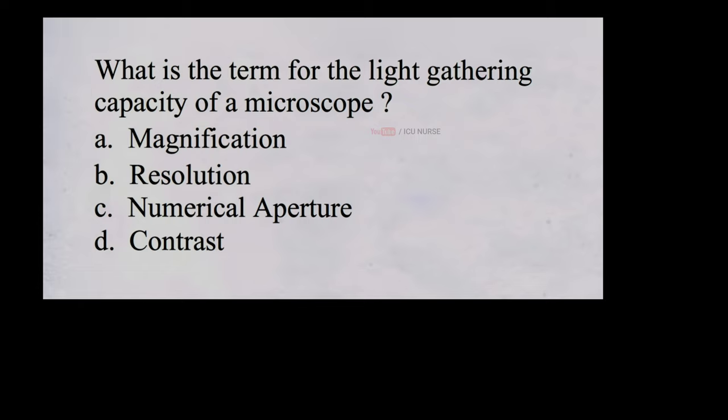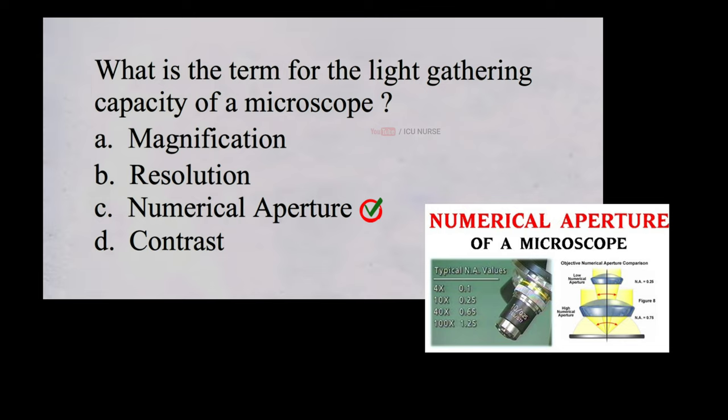What is the term for the light-gathering capacity of a microscope? A. Magnification, B. Resolution, C. Numerical Aperture, D. Contrast. And the correct answer is C, Numerical Aperture. The numerical aperture of a microscope is like a measure of its ability to capture details. A higher numerical aperture means the microscope can show smaller things more clearly. It's like having a better lens for your microscope allowing you to see tiny details with more precision.